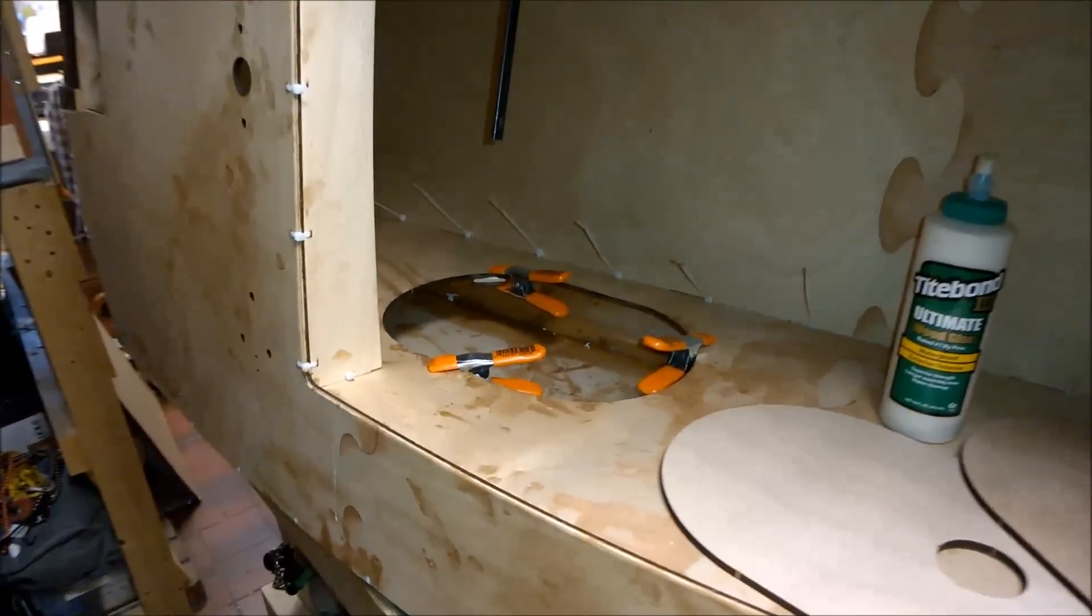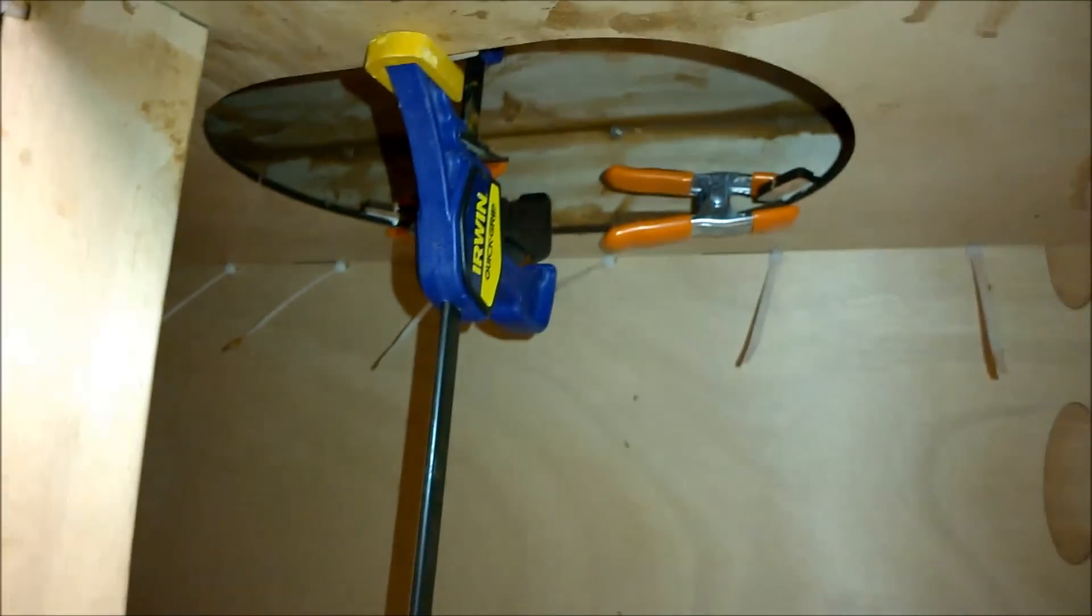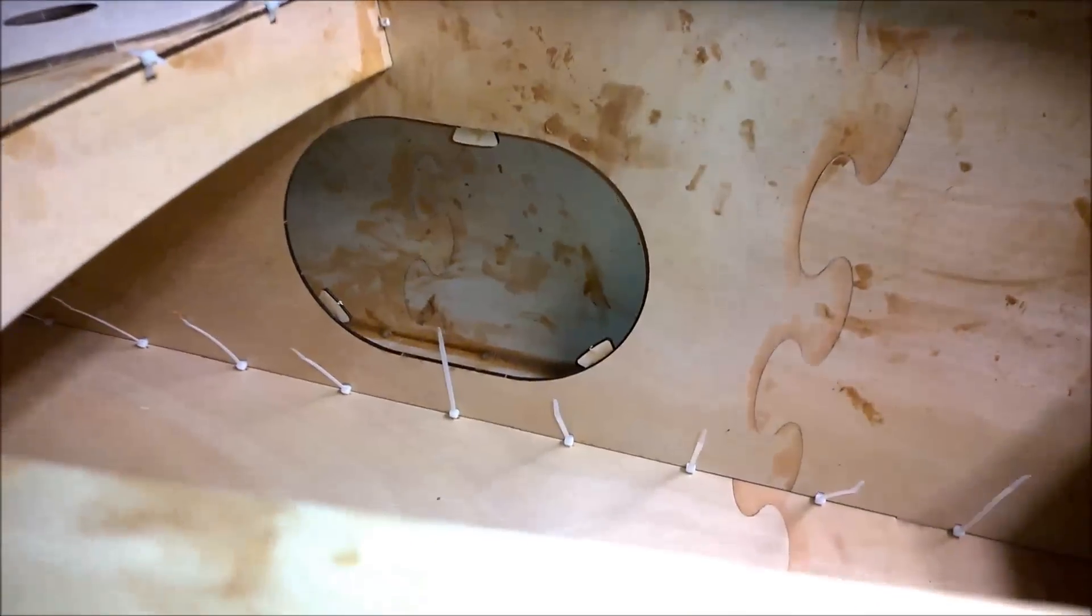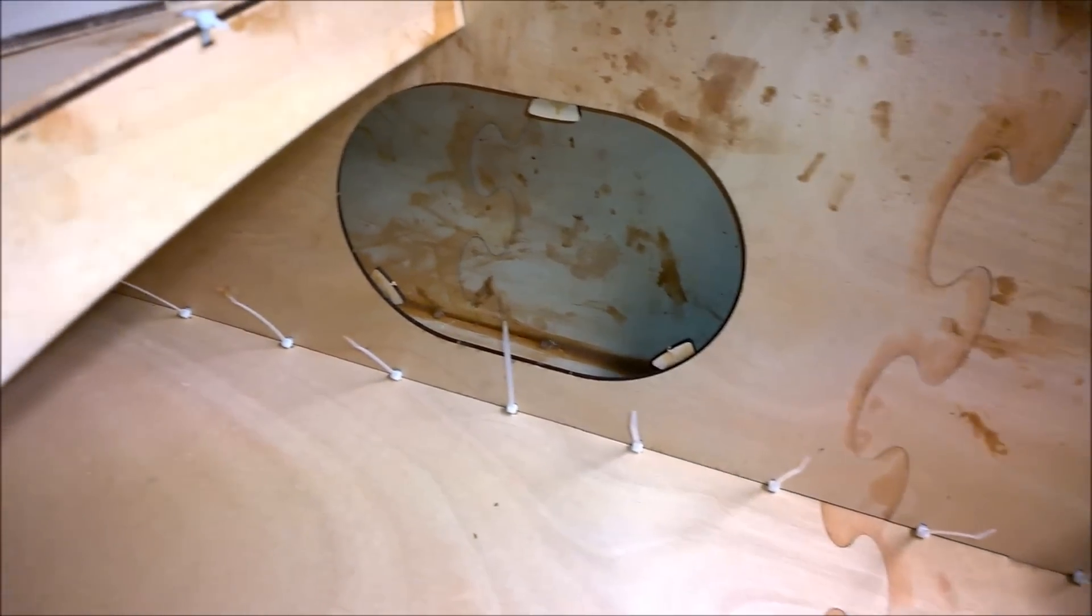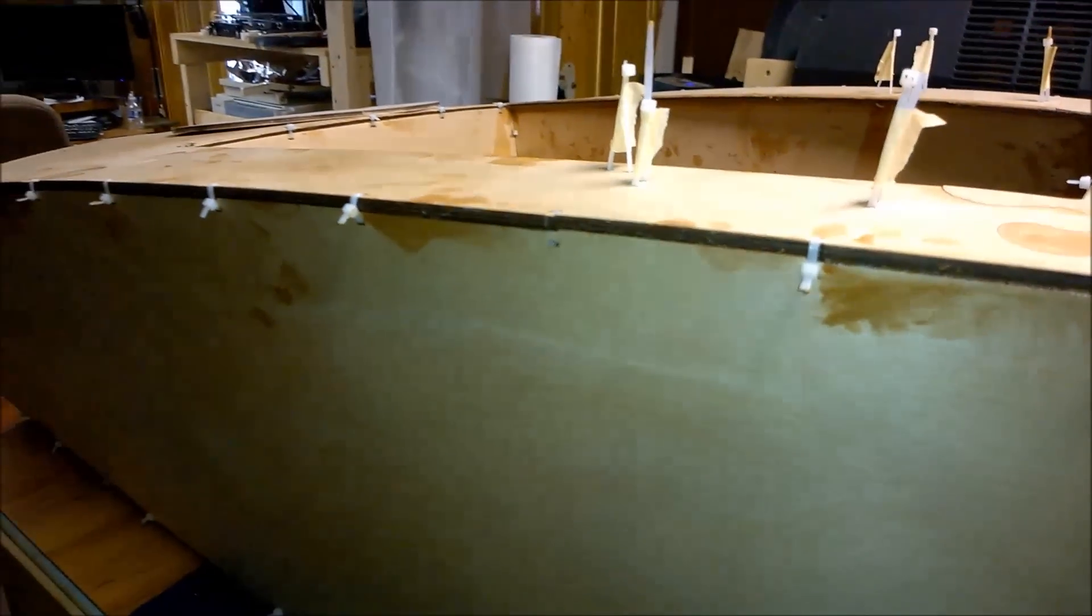We've got the tabs all glued in. I'm a big fan of typing on three or four things like this. We'll let those set up and then we'll glue the covers on. We've got the inside tabs glued on for the bulkhead covers. That's in preparation for the foam pour.